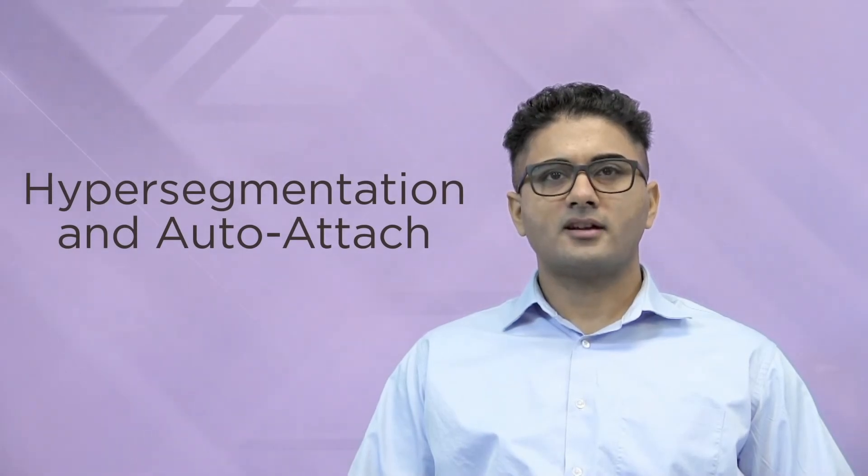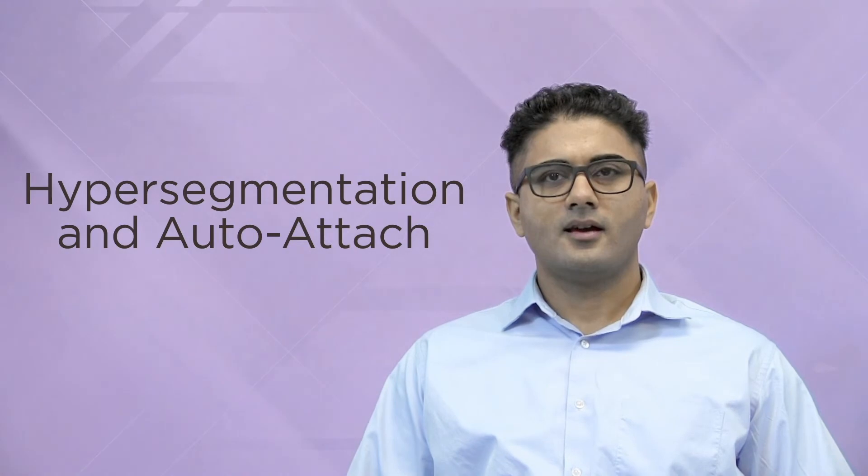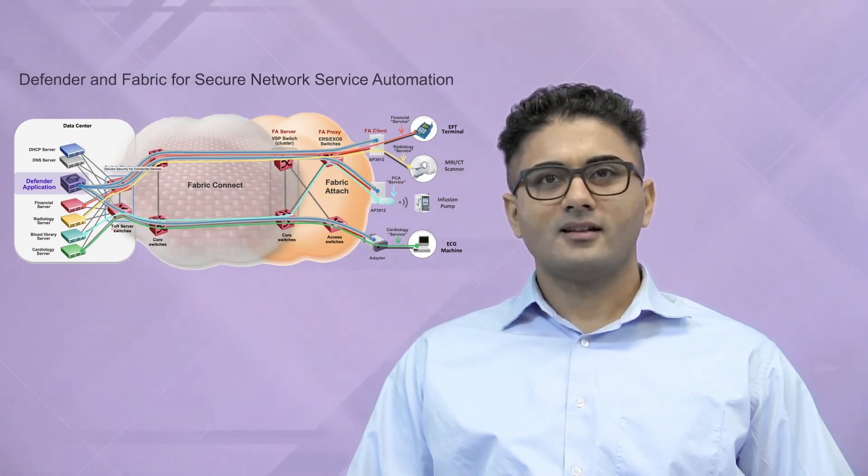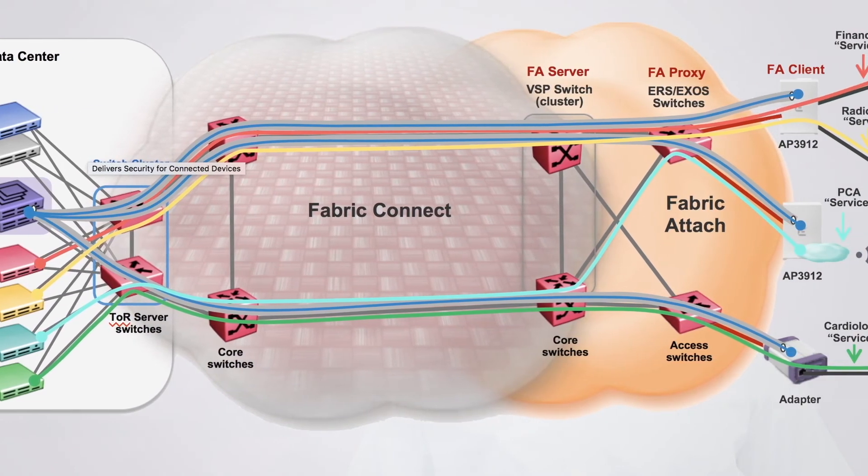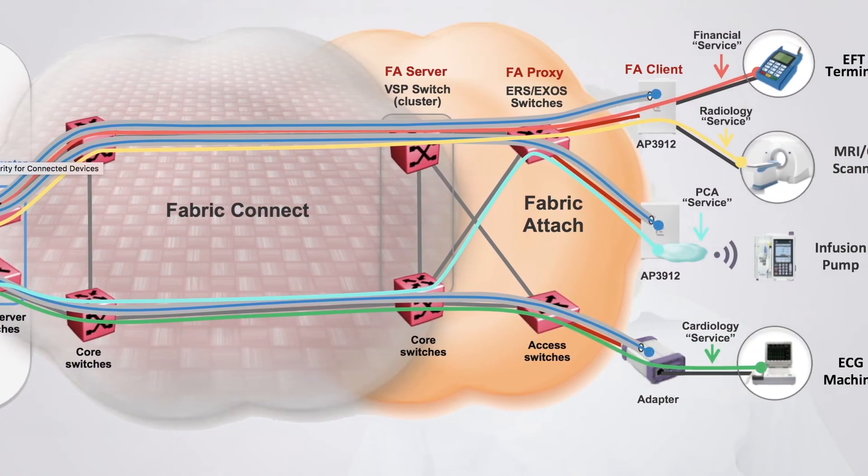Hyper-segmentation and auto-attach are features native to extreme's fabric infrastructure. When these features are combined with the Defender, the result is a highly secure, robust network without the overhead of time-consuming manual configurations.